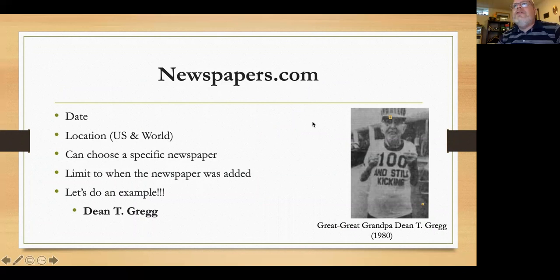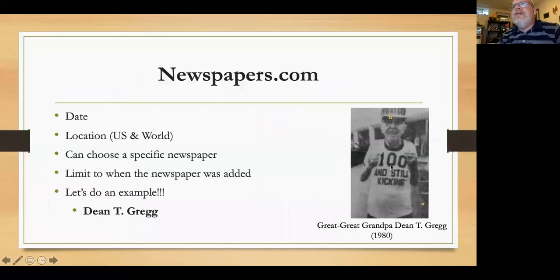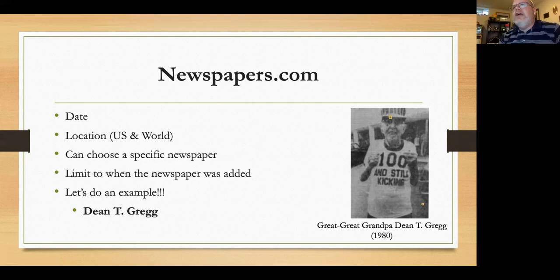Here's an example from Newspapers.com — my great-great-grandpa Dean, who lived to be 100 years old and actually got to vote in the 1980 election. If I just type in 'Dean T. Gregg' and select Florida, where I knew he lived, it comes up with his obituary. It's a good site because you can really narrow things down. There are also newspapers from Europe, Africa, and pretty much every continent except Antarctica that you can find through Newspapers.com.